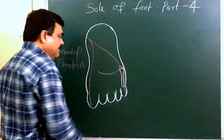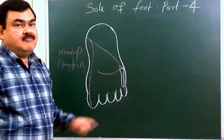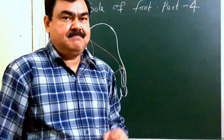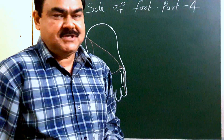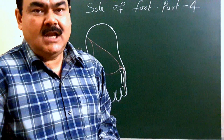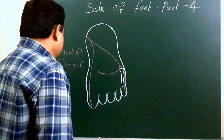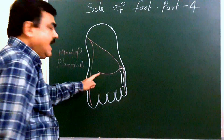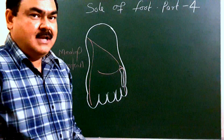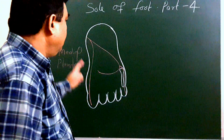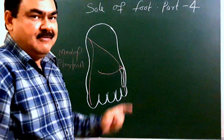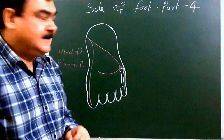The deep branch forms the plantar arch. This plantar arch is present between the third and fourth layer of the sole, accompanied by the deep branch of the lateral plantar nerve and also accompanied by the vena comitans.